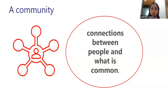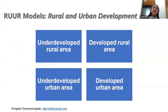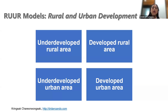When we talk about a community, please consider that it is the connection between people and what they have in common — one village is a community, and in urban areas, when people share the same understanding or live close to each other, that is also a community. There is also a model dividing development into four types: underdeveloped rural, developed rural, underdeveloped urban, and developed urban — so both rural and urban can have underdeveloped and developed areas.